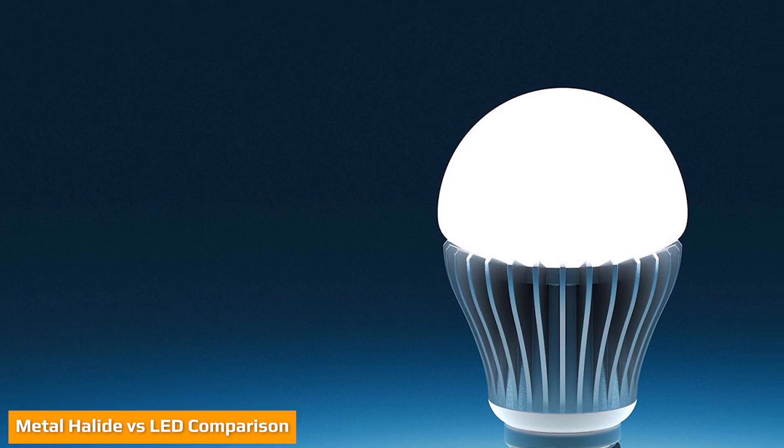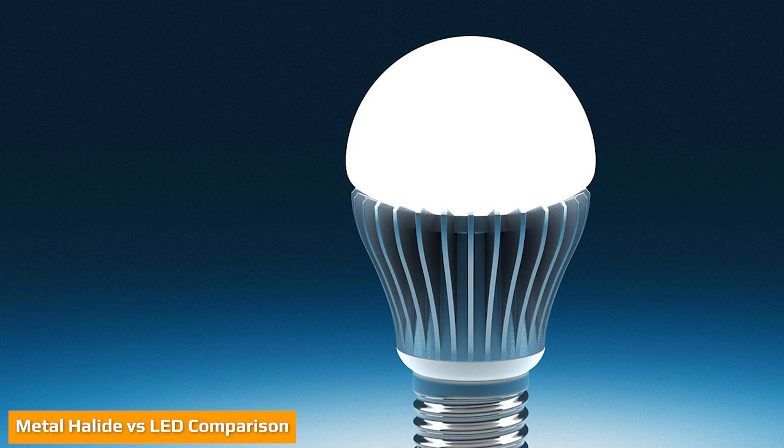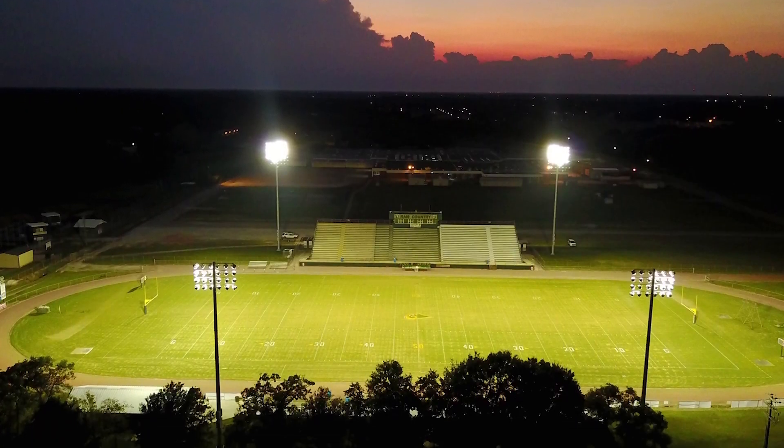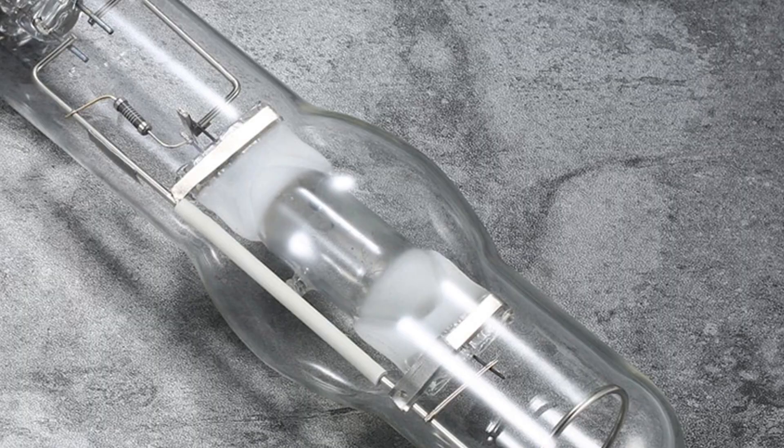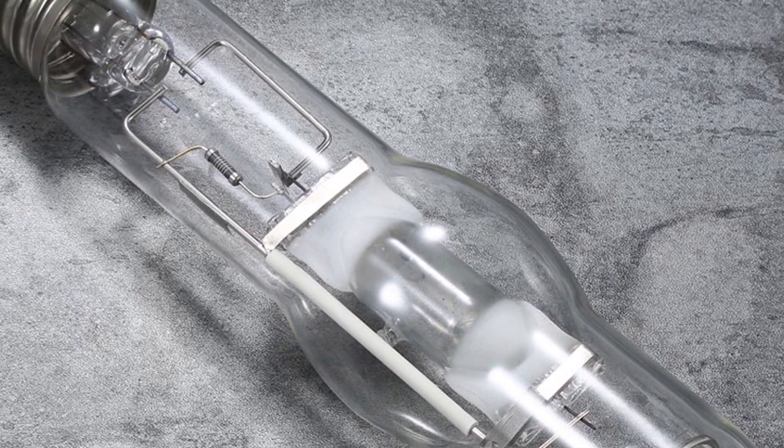LED are available in a wide range of color temperatures that generally span from 2200K to 6000K. Metal halide lamps generate a very cool white light. They are available in color temperatures as low as 3000K. Some metal halides are available with extremely cool color temperatures up to 20,000K.